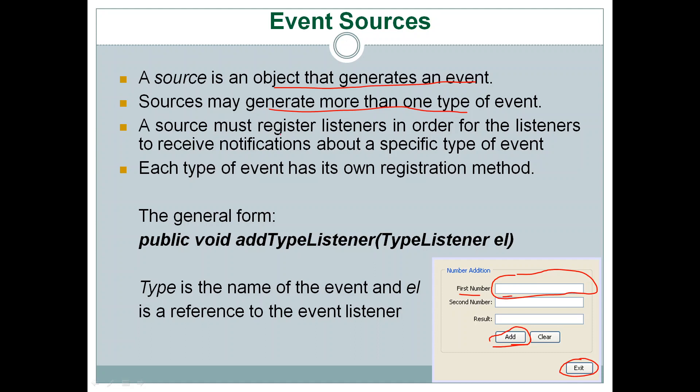In the case of text fields, when you type something the text field generates a key event; when you move the mouse over it, it generates mouse or mouse motion events. So a single source may generate different types of events. A source must register listeners to receive notifications for a specific type of event. To handle the events generated by a source, we have to register a particular listener with that source. For example, suppose on clicking an Add button we want to perform something — we have to register an action listener with that button, so that whenever the button is clicked the registered listener is automatically called.